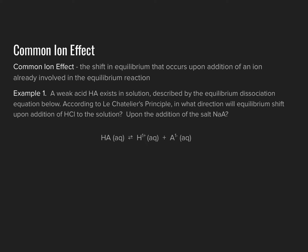Let's consider what happens when we add hydrochloric acid. Recall that hydrochloric acid is a strong acid, which means it completely dissociates into solution into its component ions — the H⁺ cation and the Cl⁻ anion. Comparing the two equations — the dissociation of weak acid HA and the dissociation of strong acid HCl — notice there is an ion common to both: the hydrogen cation H⁺.